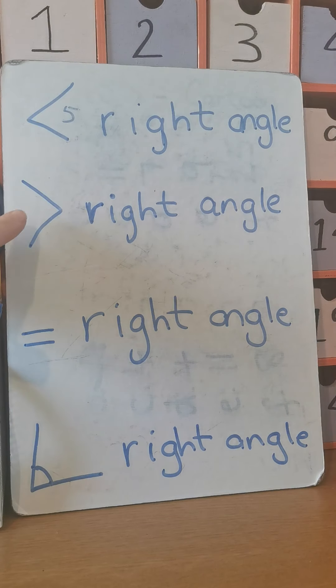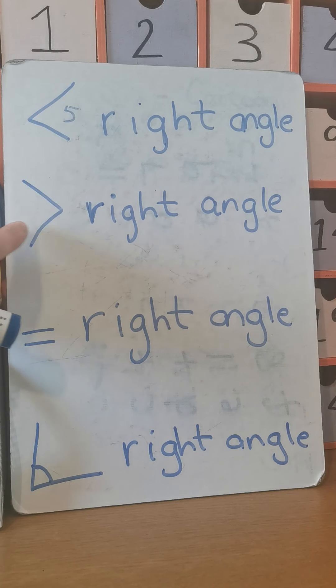The one underneath means greater than, because greater, the bigger side comes first. Greater than. And this sign, we all know that one, it means equal to.